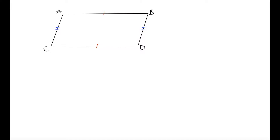We know that AB is equal in length to side CD, and side AC is equal in length to side BD. So how can we prove that this is a parallelogram? One thing that we can do is draw in a diagonal joining side CB.